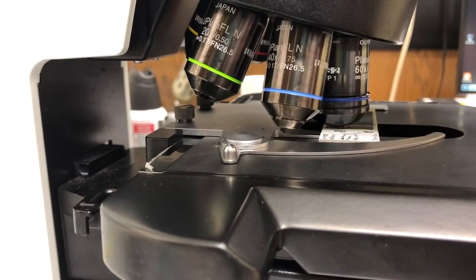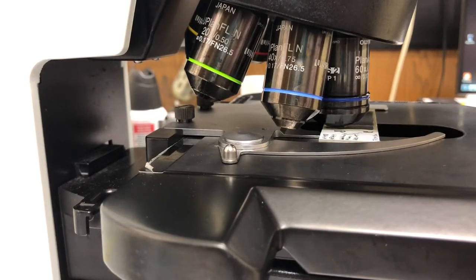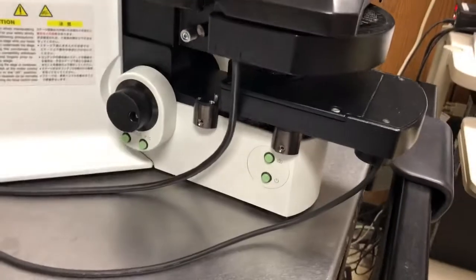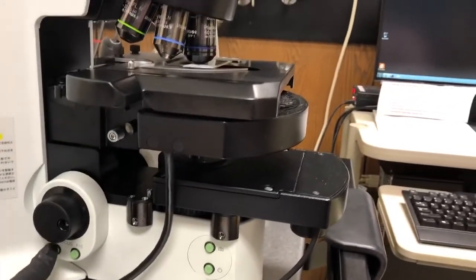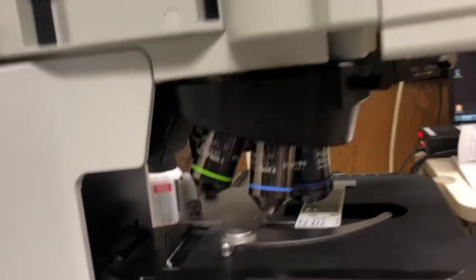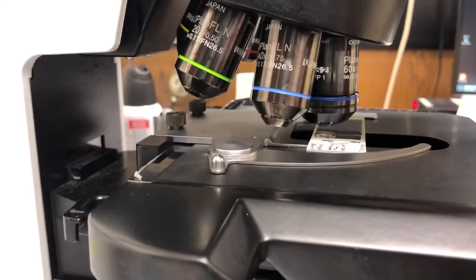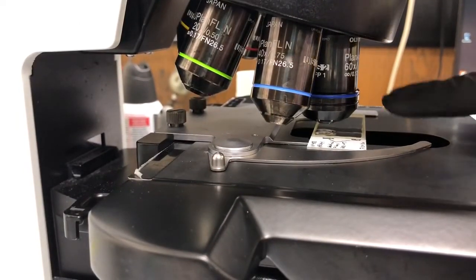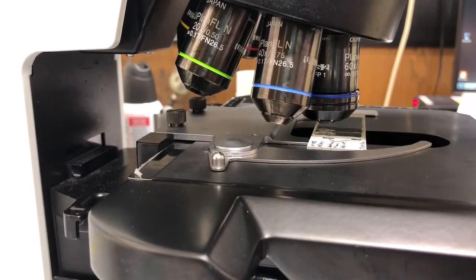Okay so I'm done with imaging. What we need to do now is to safely remove our sample and clean the objective. To safely remove our sample again we're going to hit that escape button down here. That will move the sample away from the objective. We always want to do this when using an oil objective because we don't want to scrape the objective on the sample or vice versa.